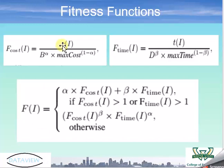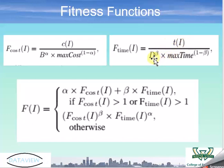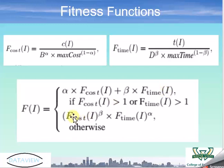In the cost function, C of I is the cost of individual I, B is the budget of the workflow, and max cost is the most expensive solution in the population. In the time function, T of I is the completion time of I, D is the deadline of the workflow, and max time is the largest completion time in the population. The final function states that if the fitness value of cost I or time I is greater than one, then use the top value; otherwise, use the bottom value and multiply the two fitness values together.